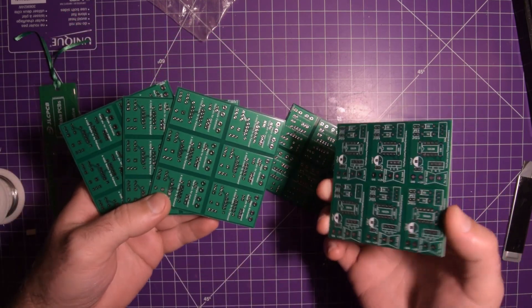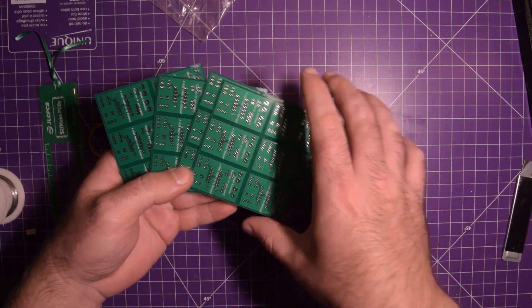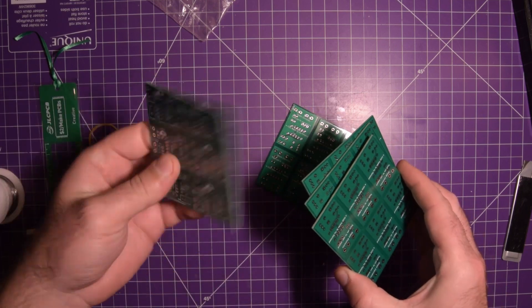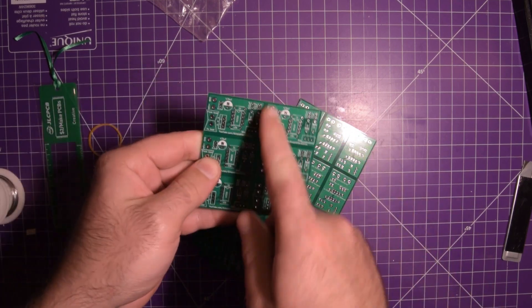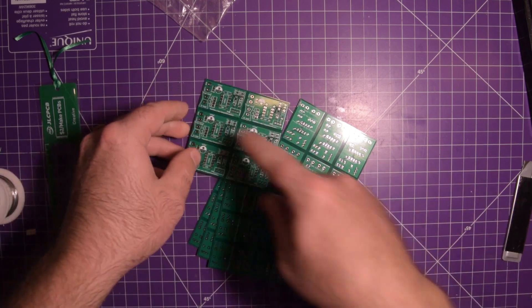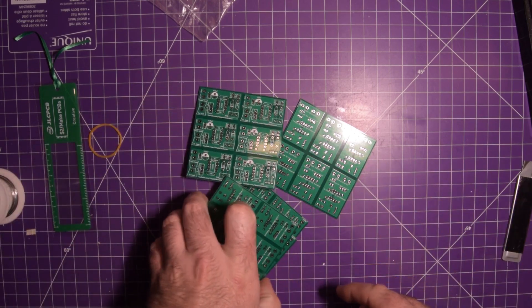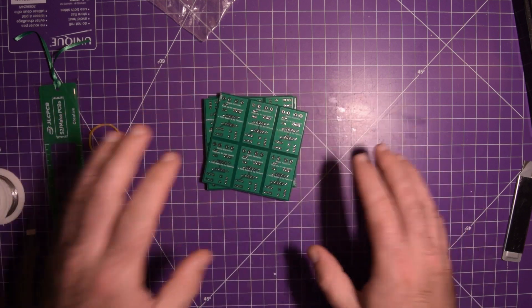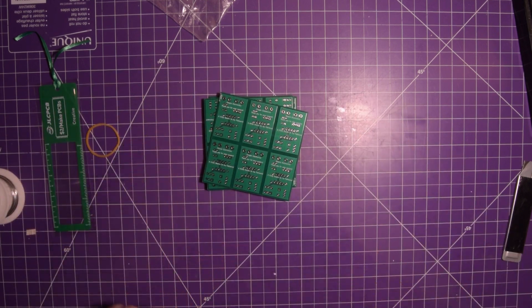So yeah, five boards, six of these, so six on each board. So 30 boards. That is pretty cool. I don't know how I'm going to chop them apart yet. I'm going to try to score them and snap them. But holy crap. All right. Enough talk. Let's take a closer look at this.